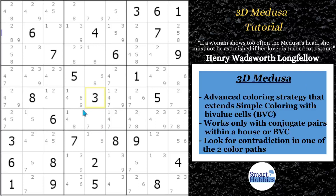All right, let's start with a definition. 3D Medusa strategy is an advanced Sudoku strategy that extends simple coloring with bi-value cells. I need to explain a couple things before I get into how to do it.